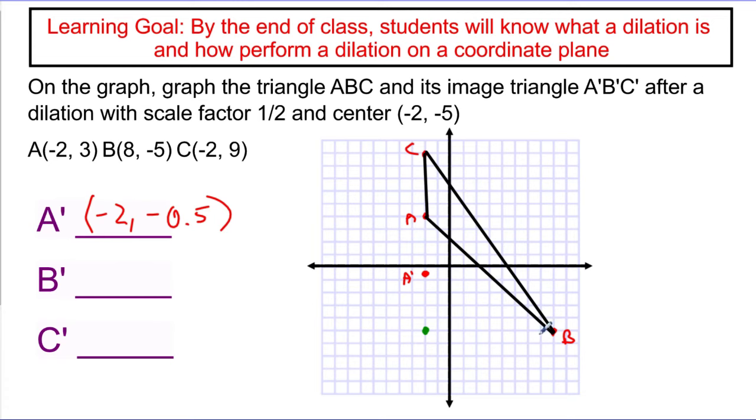And I'm going to do that for each of them. For B, it looks like it's 10 units away from my center of dilation. So I'm going to count half the distance, 5, and there's my new B prime.